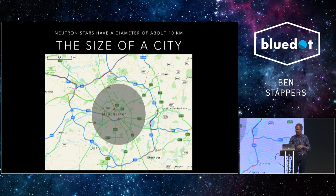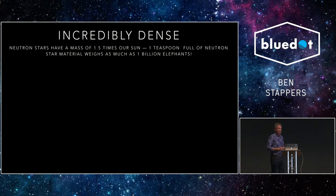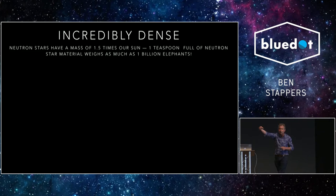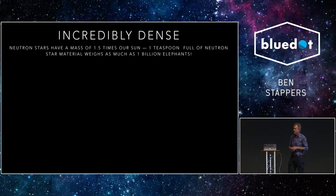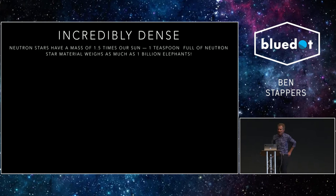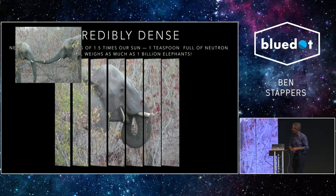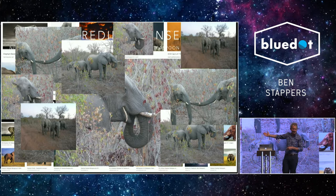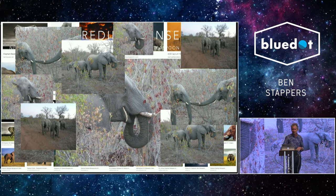And that means we've created an extremely dense object. You might ask yourself, how dense? Well, neutron stars have a mass of 1.5 times our sun in a radius of 10 kilometers. If you had a teaspoon full of neutron star material - if you could somehow dip a teaspoon into a neutron star - what you would find is that it weighs as much as 1 billion elephants. So just in case you don't know what an elephant is, this is an elephant and this is about 6 billion elephants, which is equal to one teaspoon full of neutron star material.